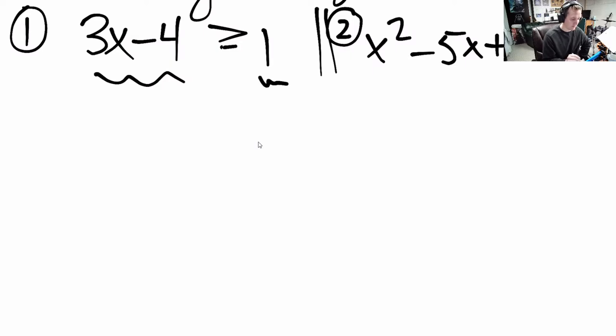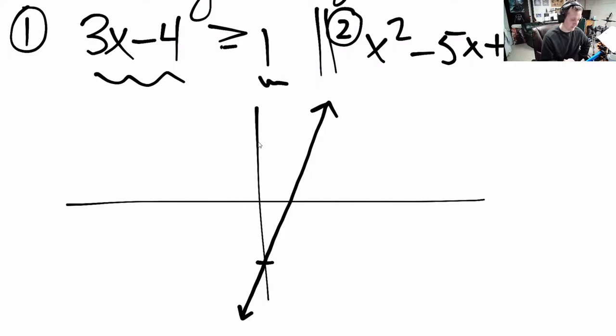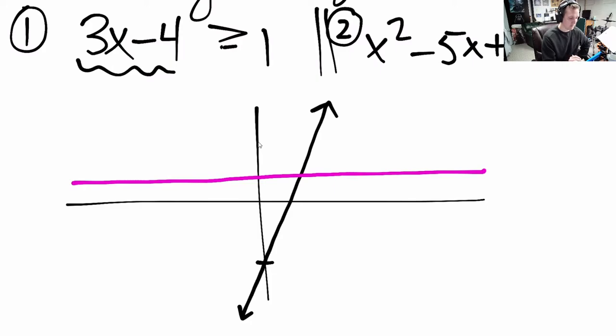So I'll do this as my first example and I'll do this as my second example. So inequality, the process is going to be exactly the same. You're going to take the left side and you're going to graph that as if it was its own function. You're going to take the right side and graph it as if it's its own function. We've done this, so 3x minus 4 looks like this, crosses down here and it goes up pretty steeply.